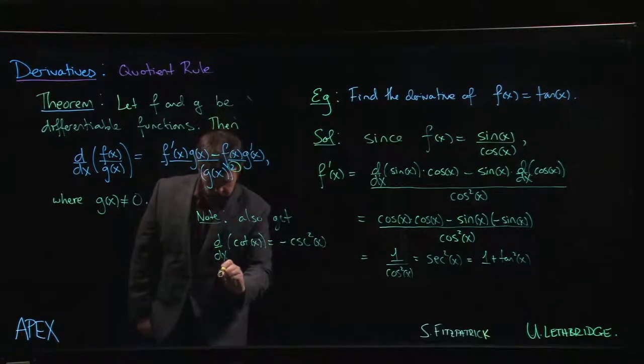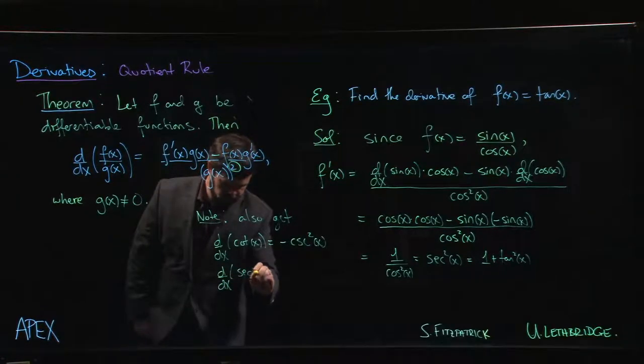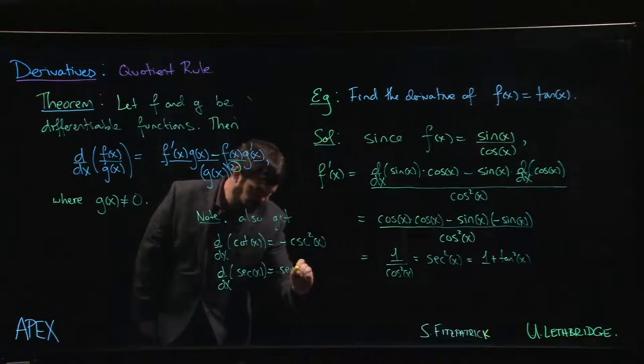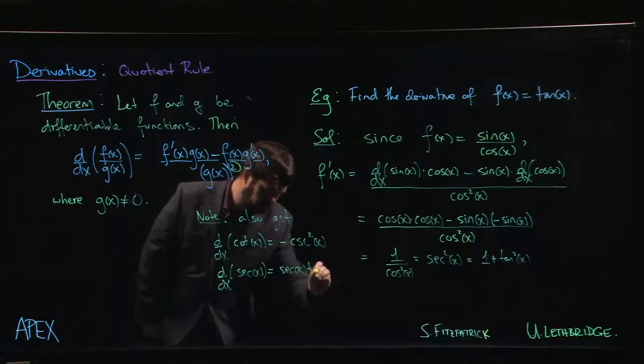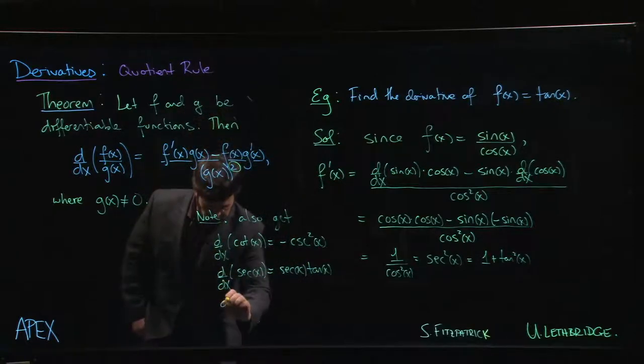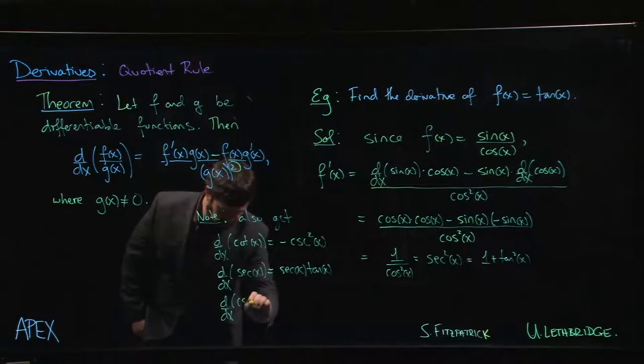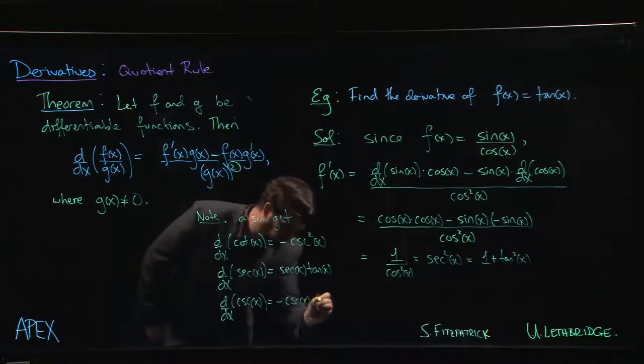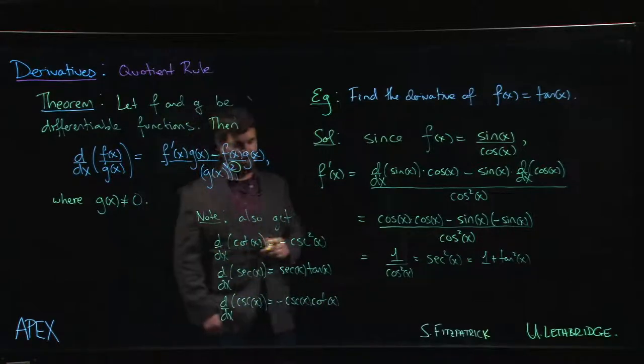You can also show that the derivative of secant is secant x times tan x, and that the derivative of cosecant x is minus cosecant x times cotangent x.